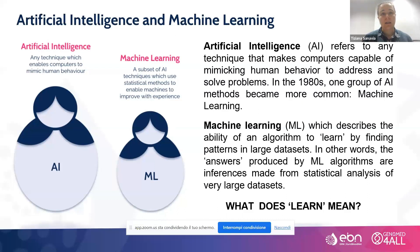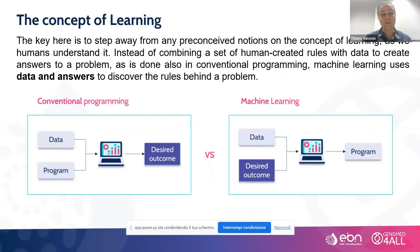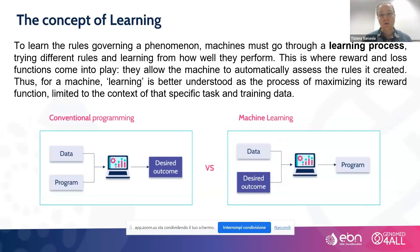In the 1980s, with machine learning, we were able to provide models that learn new rules from data. In conventional programming, we provide the computer with data and human-created rules to find a desired outcome. In machine learning, we change that paradigm: we provide the data and what we expect as a desired outcome, and we allow the machine to create its own rules through a learning process, automatically assessing the rules it creates.